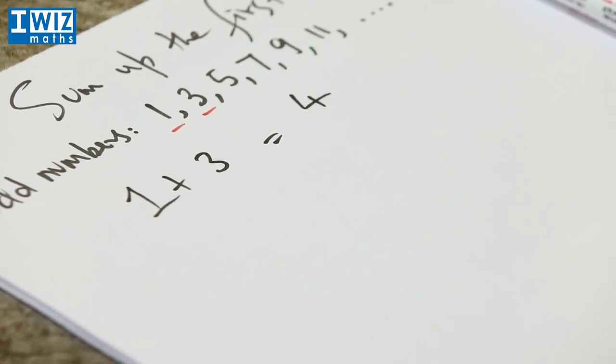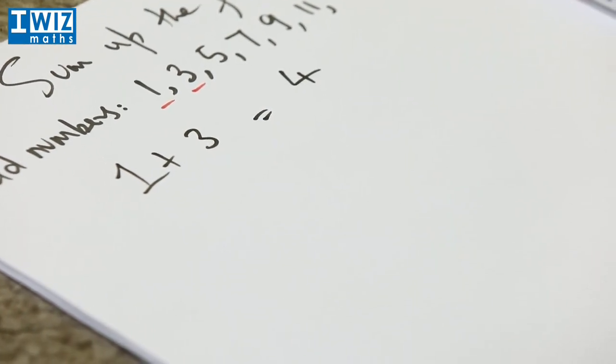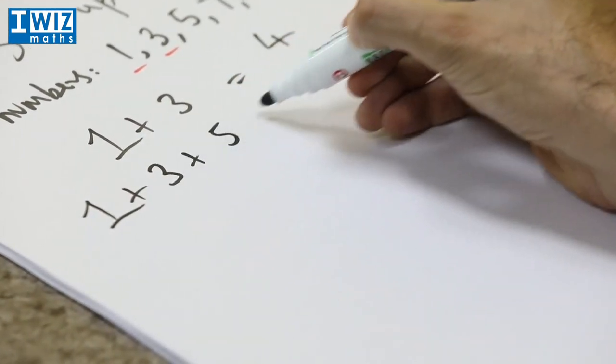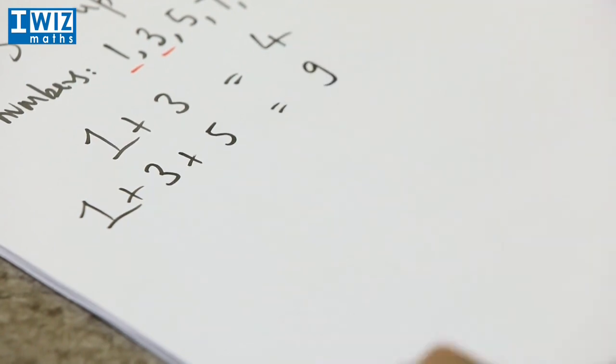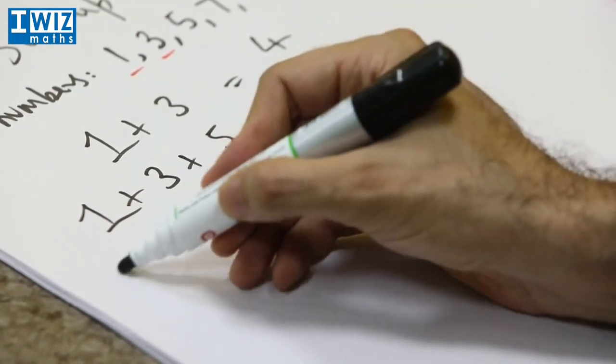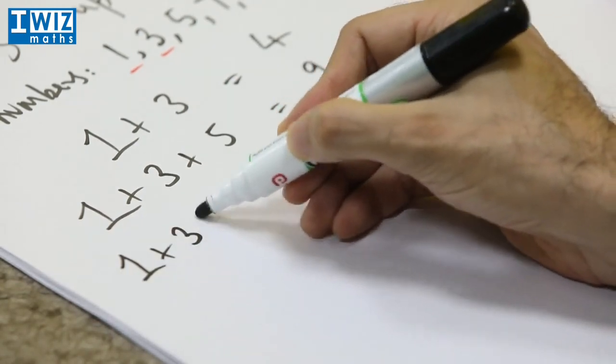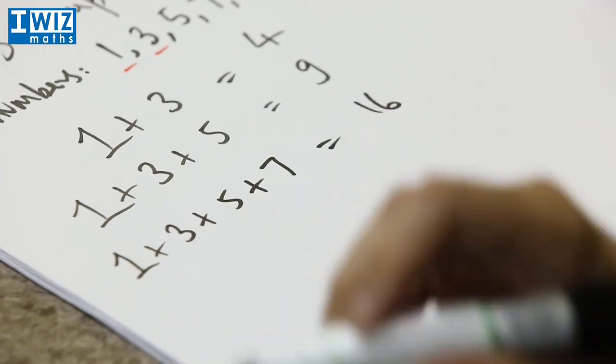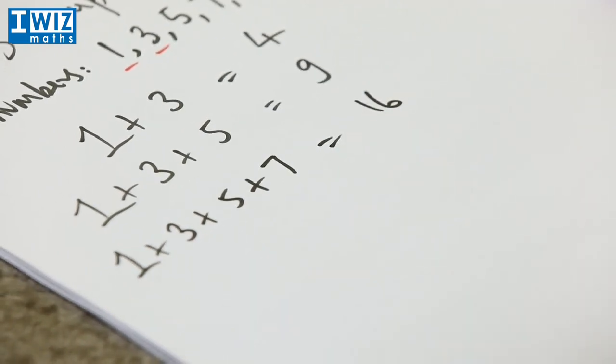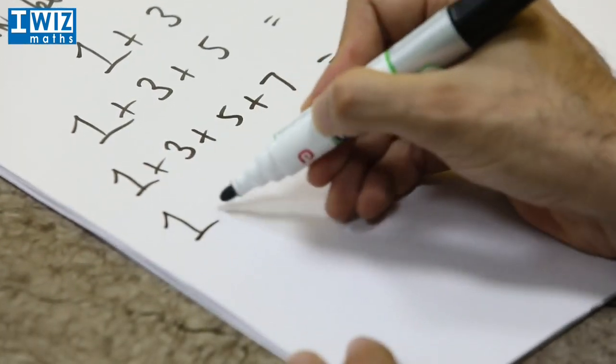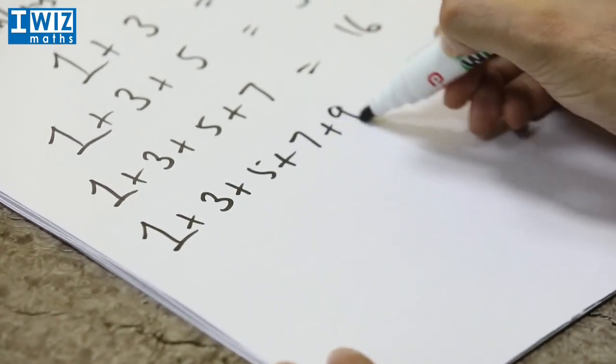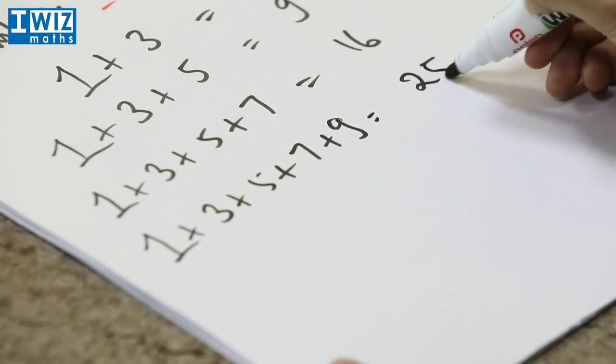Now let's go ahead and add the first three odd numbers which will be 1 plus 3 plus 5 which is equal to 9. Let's add the sum of the first four odd numbers which is 1 plus 3 plus 5 plus 7 which is 16, and let's look at the sum of the first five odd numbers which is 1 plus 3 plus 5 plus 7 plus 9 is 25.